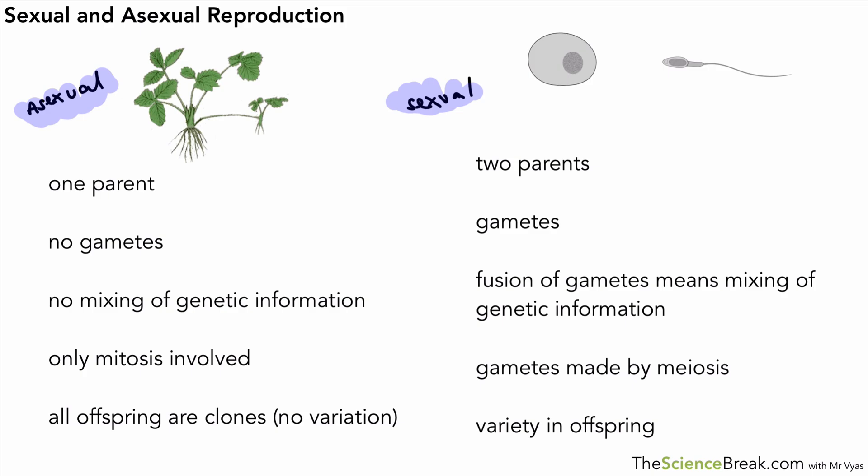The fusion of gametes means mixing of genetic information, and the gametes are produced by meiosis. This all leads to variety in the offspring. That's a summary of sexual and asexual reproduction — quite an important comparison of the two processes. Thank you for watching and I'll see you again soon.